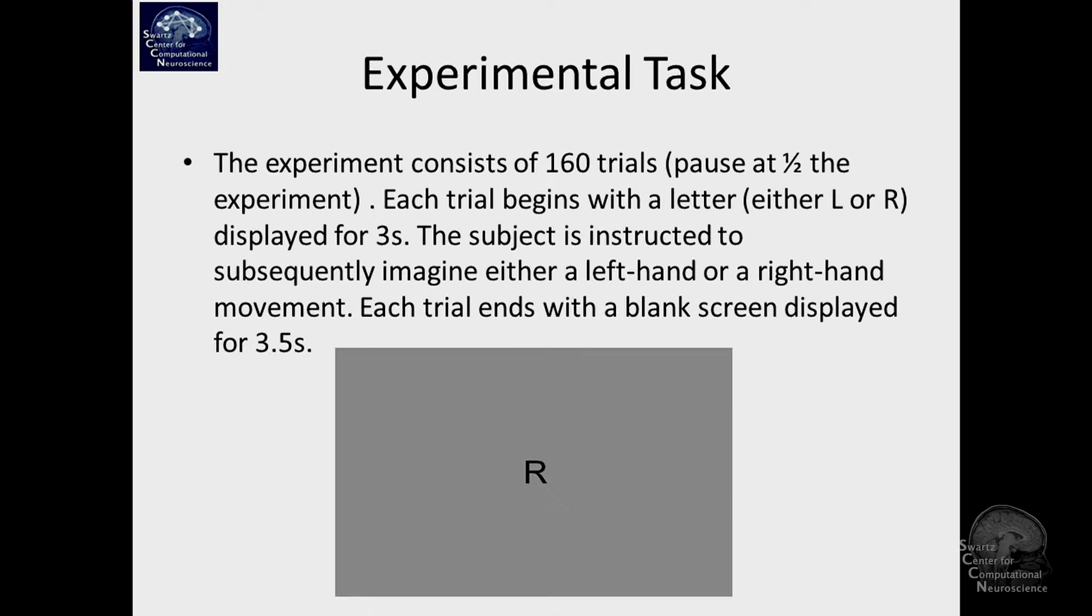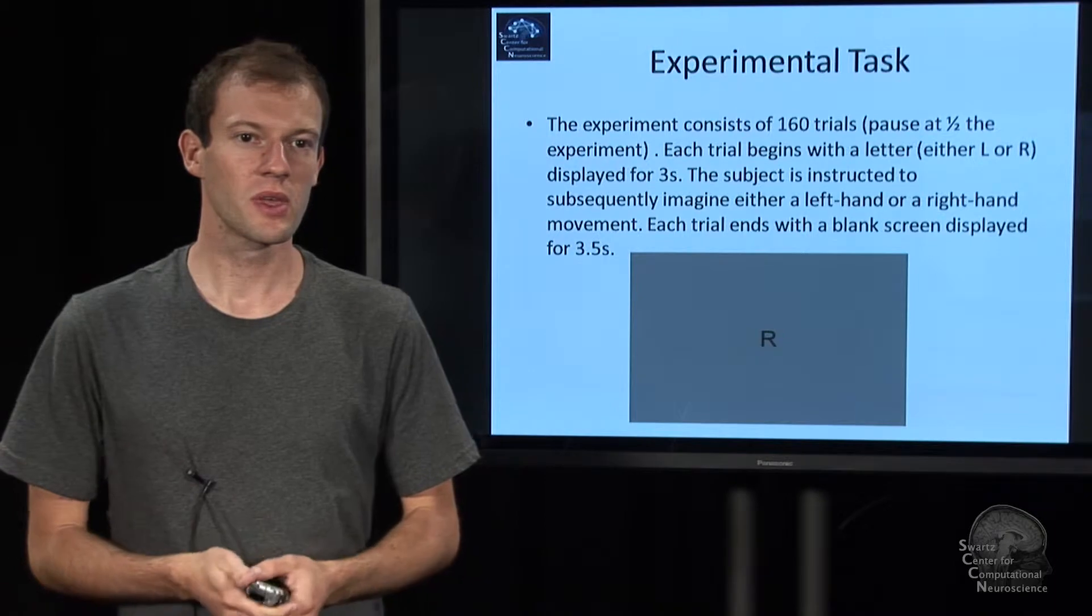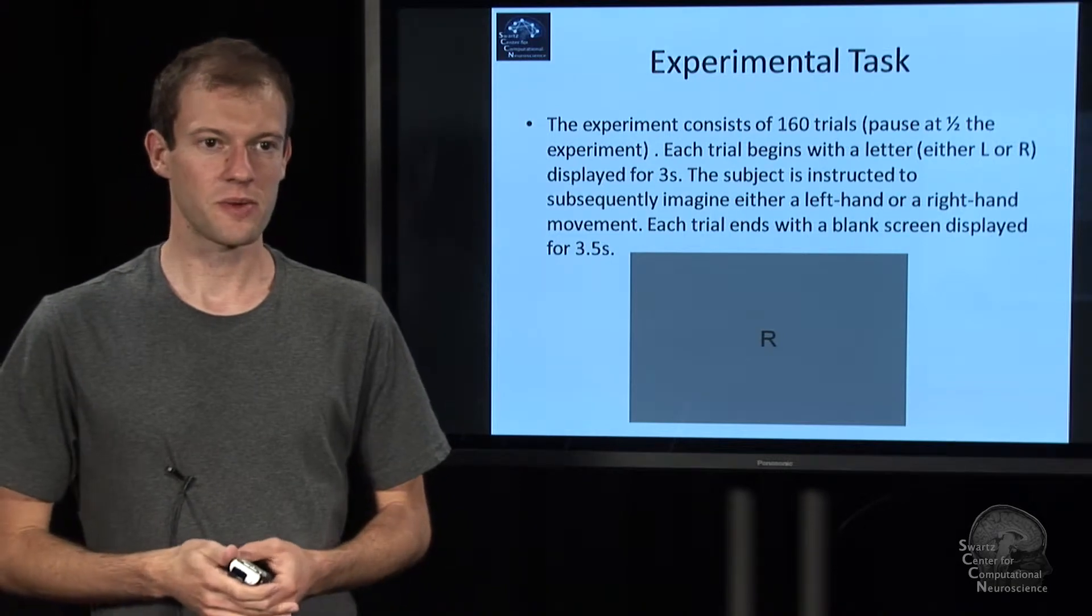This example is about motor cortex idle oscillations. The experimental task is as follows: one experiment with 160 trials, there's a pause in the middle. At the beginning of each trial, the person sees a letter - either L or R - that stays there for three seconds. The subject gets an instruction to imagine a left-hand movement or a right-hand movement depending on whether they saw L or R. They'll do approximately 80 left-hand imagined movements and 80 right-hand imagined movements. After that, you get some blank screens so the person can recover.